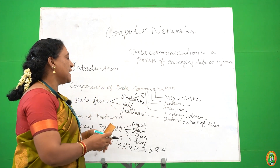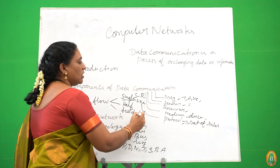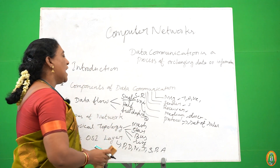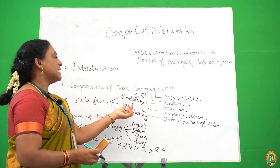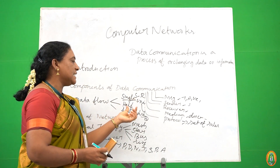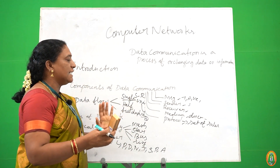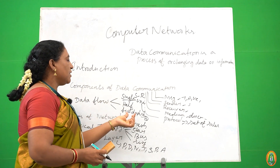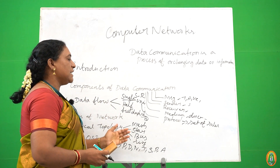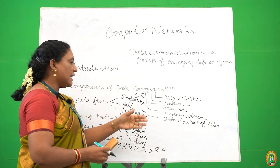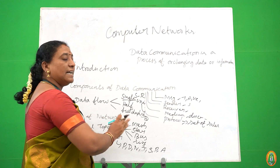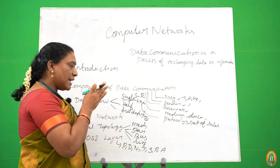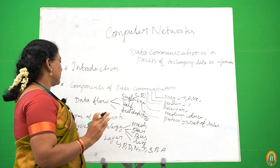Half duplex and full duplex both are bidirectional. Half duplex means sender and receiver send the data but not at the same time. And full duplex means sender and receiver send the data at the same time.